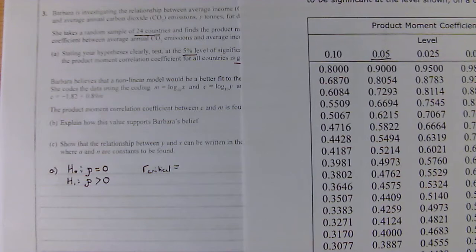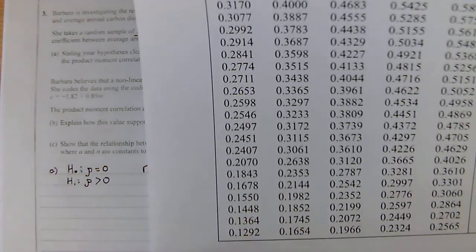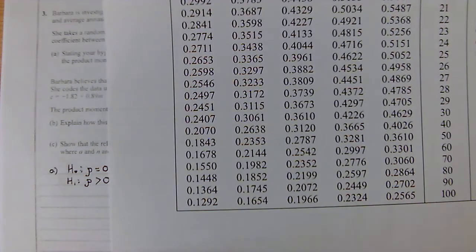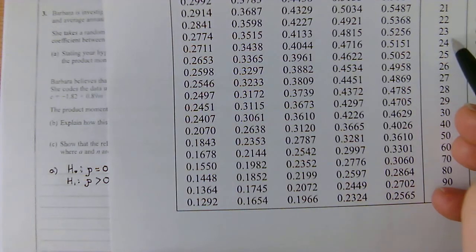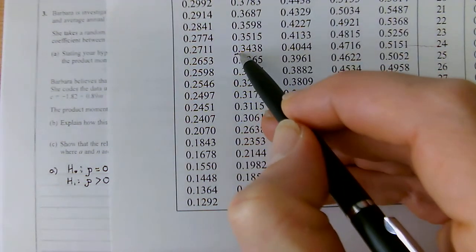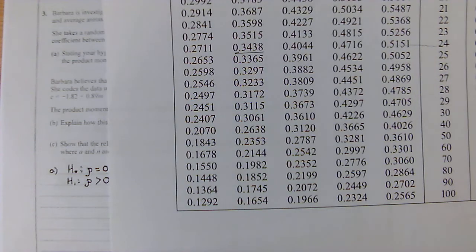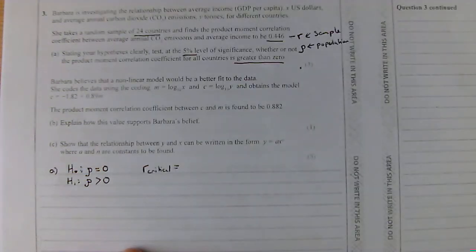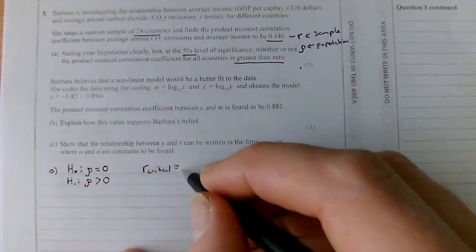We're looking for n equals 24, so we're in the second column. And we are going to be looking for 24 in the second column is going to be a critical value of 0.3438. So R critical equals 0.3438.